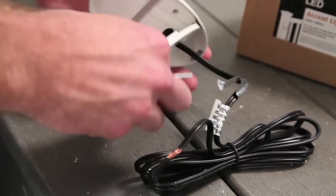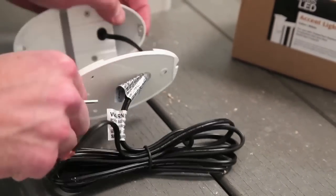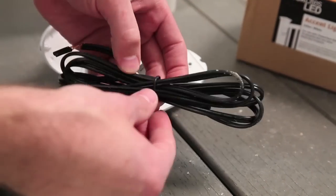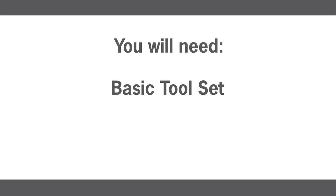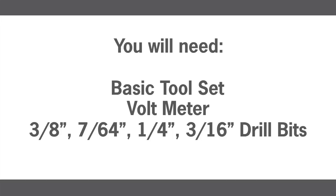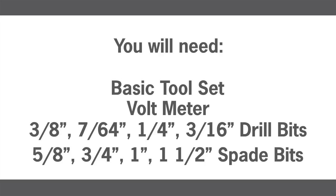Some accommodations need to be made while installing the railing systems for the wiring and fixtures. In addition to a basic tool set, you will need a voltmeter, 3-eighths inch, 7-sixty-fourth inch, 1-quarter inch, 3-sixteenth inch drill bits, 5-eighths inch, 3-quarter inch, 1 inch, and 1-1/2 inch spade bits.